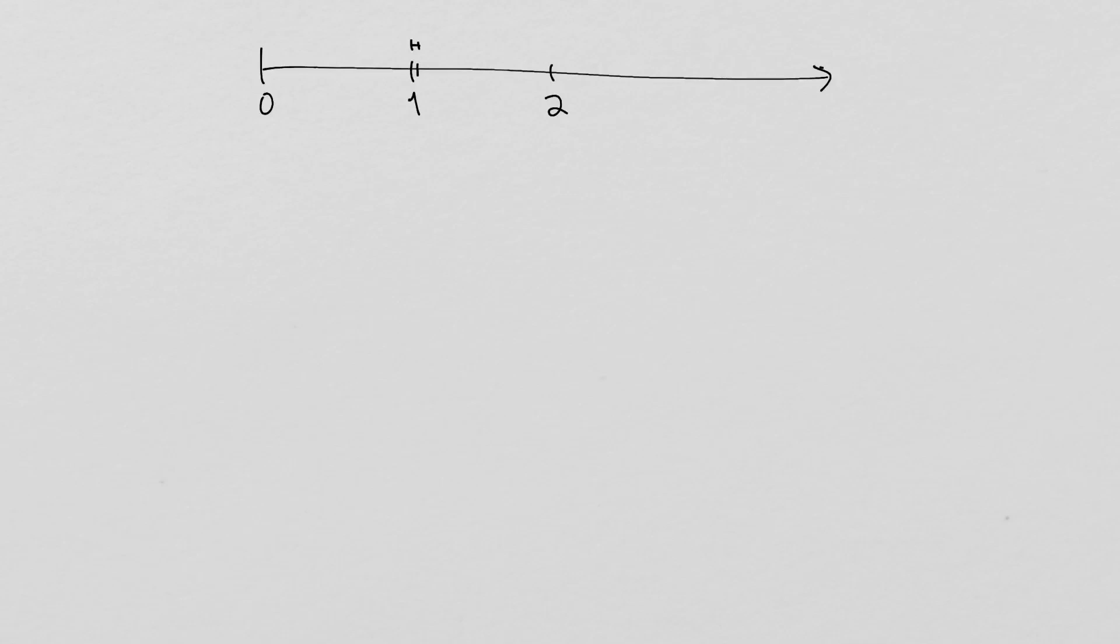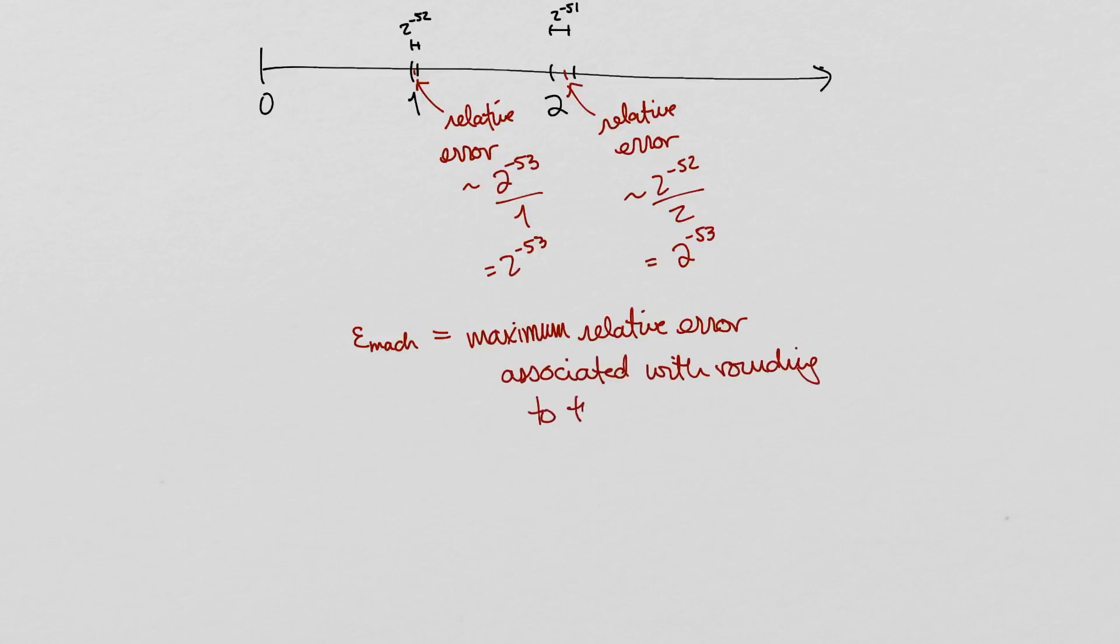The largest relative error associated with rounding to the nearest float is called machine epsilon. For float 64s, this number is half the tick spacing in the interval from 1 to 2, since the farthest from a tick a point can be is halfway between two consecutive ticks. In other words, machine epsilon is 1 half to the 53. Sometimes authors use the term machine epsilon to refer to twice this number, in other words, the actual tick spacing.